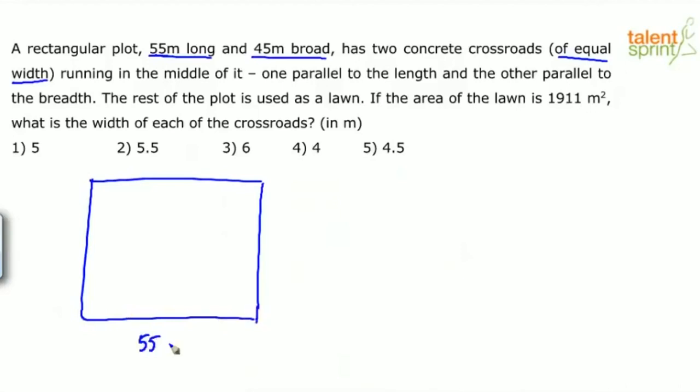This is the length 55 meters and the breadth is 45 meters. Now it has two concrete crossroads running in the middle of it, one parallel to the length and another parallel to the breadth. There is a concrete road in the middle parallel to the length and then there is a road parallel to the breadth.